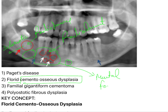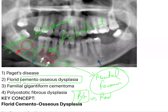There is a mental foramen, and that is the reason these lesions are causing pain in the premolar area; otherwise, it would have been asymptomatic. Another thing about florid cemento-osseous dysplasia is that radiographically it starts as a radiolucent mass and then starts becoming radio-opaque.